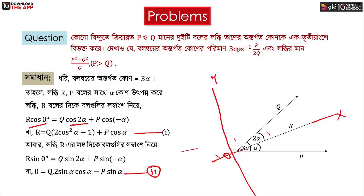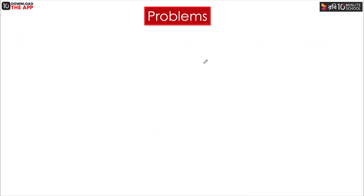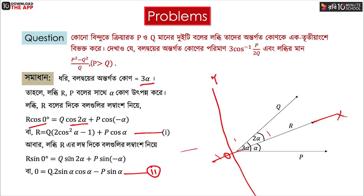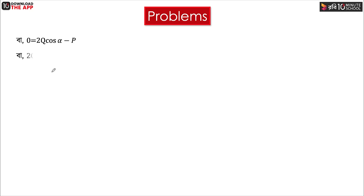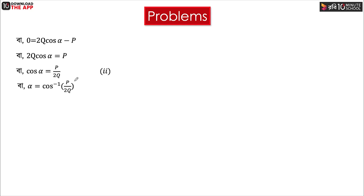We said that the result reported is 3α. We call this cos inverse p by 2q, so we call this cos inverse p by 2q. When we look at the equation, we have 2 numbers. We have seen that the equation was sin alpha. So when we look at sin alpha, we have seen that 2q cos alpha minus p equals zero. We have seen that 2q cos alpha equal to p. So cos alpha equals p divided by 2q. So alpha equals cos inverse p by 2q.